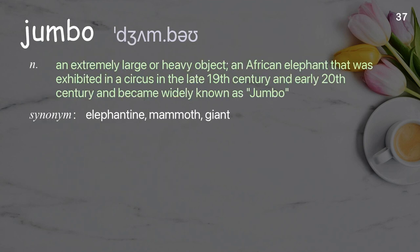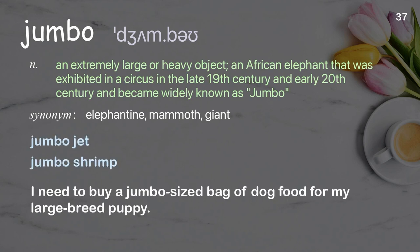Jumbo: an extremely large or heavy object; an African elephant that was exhibited in a circus in the late 19th century and early 20th century and became widely known as Jumbo. Examples: jumbo jet, jumbo shrimp. I need to buy a jumbo-sized bag of dog food for my large-breed puppy.